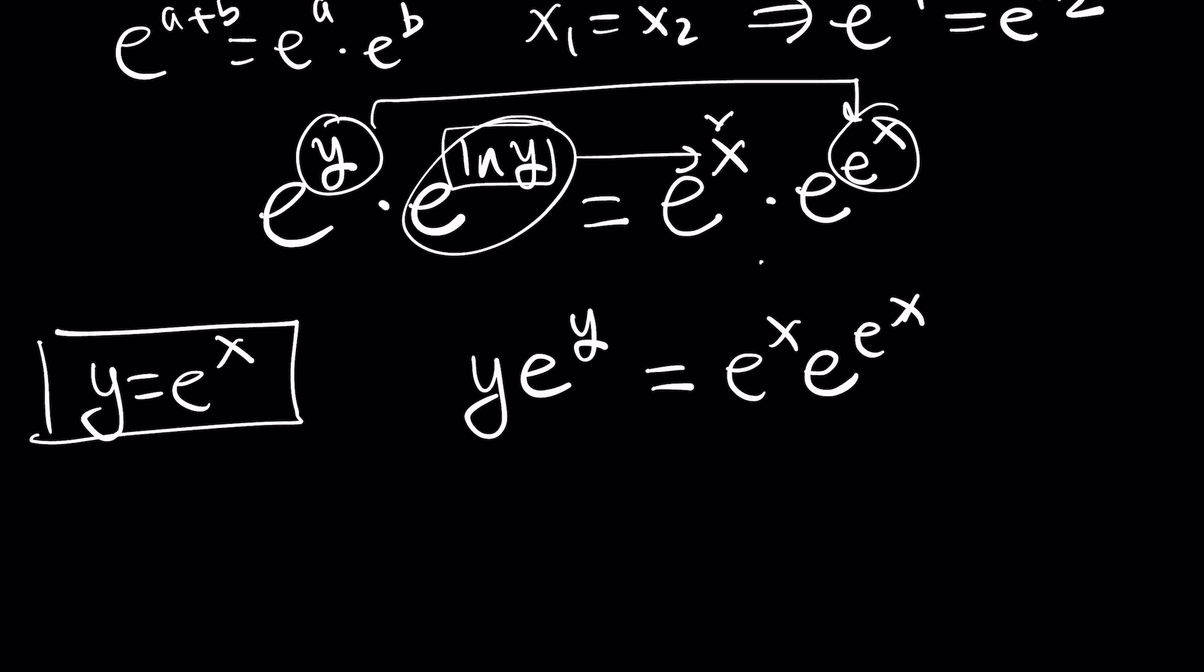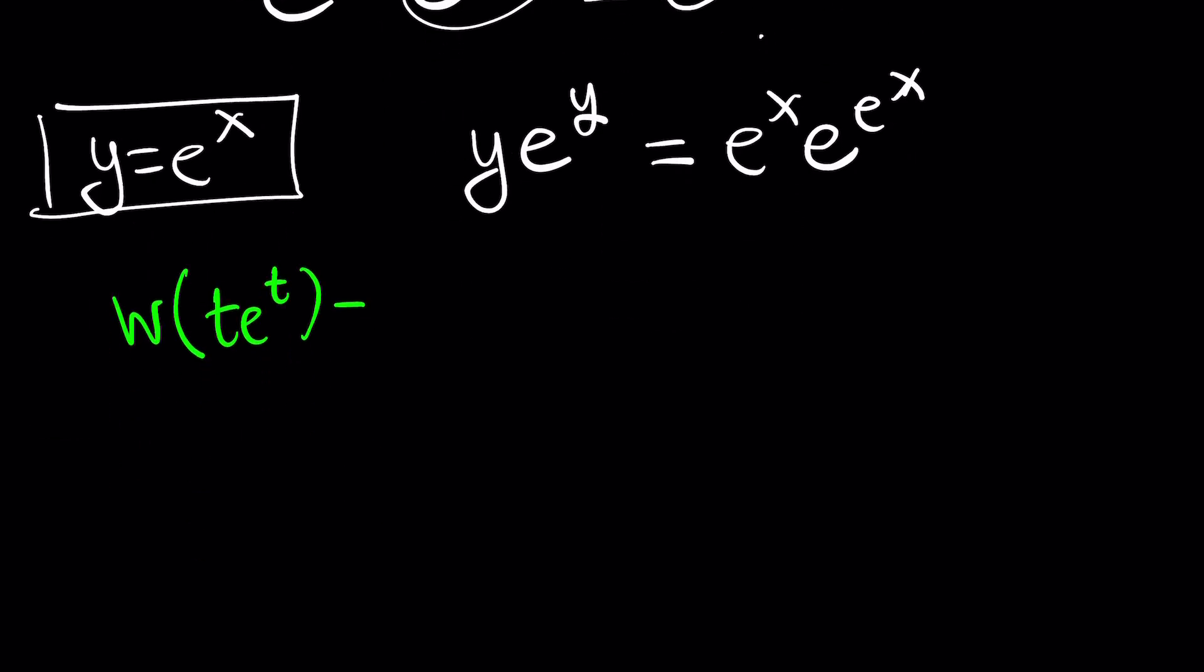Lambert's W function takes something like t e to the t. I now want to use a generic variable here but I'll apply it to our scenario. And that gives us t as an output. Which is awesome right? Kind of mathematical. Yes, it's like hocus pocus. So why not use that approach here. Apply Lambert's W on both sides and see what happens.